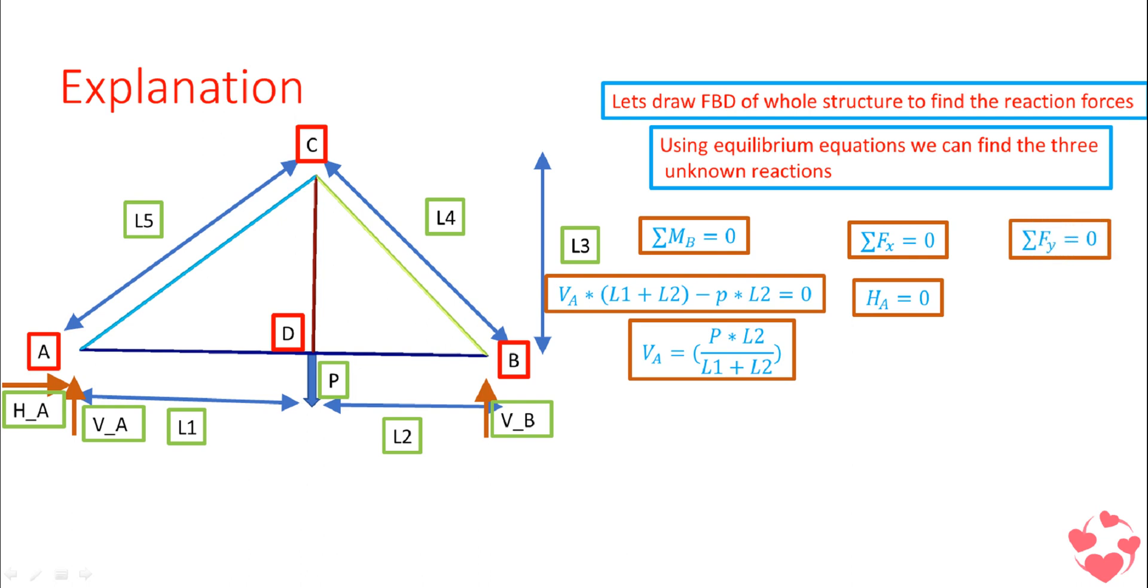Similarly, when you will equate the force in the y direction, you will get VA plus VB minus P. We are considering upward forces as positive since VA and VB are acting upward, and P is acting downwards, so VA plus VB minus P equals zero. What you will get is VB equals P minus VA.